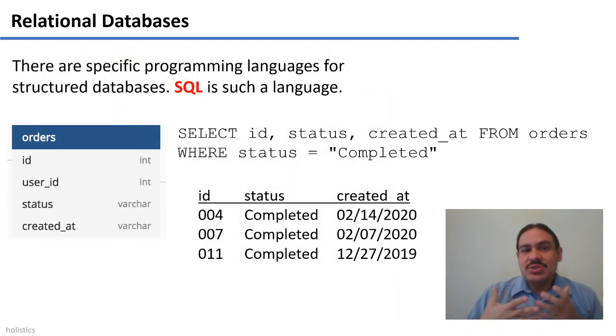There are languages to query databases, and you might be familiar with the language SQL, for example. If we wrote this command, select the ID and the status and created at from the orders where the status is completed. What the computer would do is try to go to the table orders, and then look for the columns ID, status, and created at, but only get the items for which the status is equal to completed.